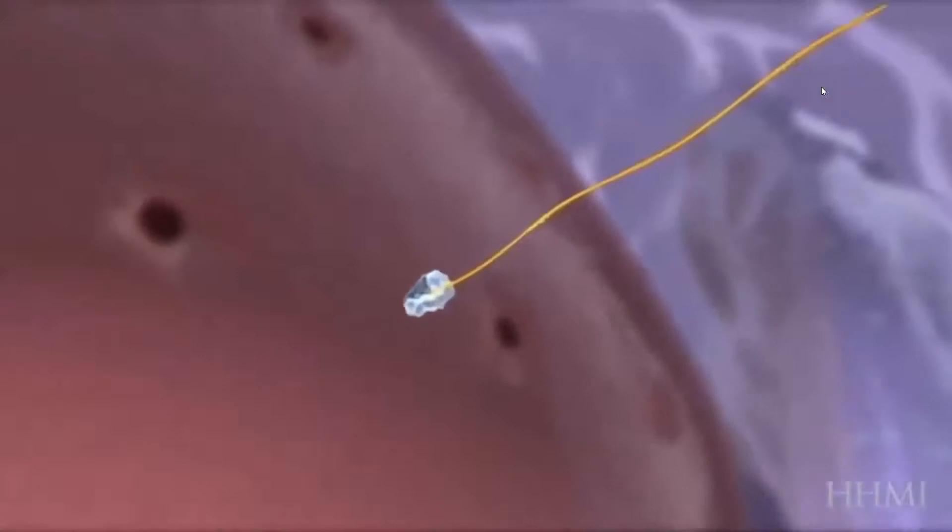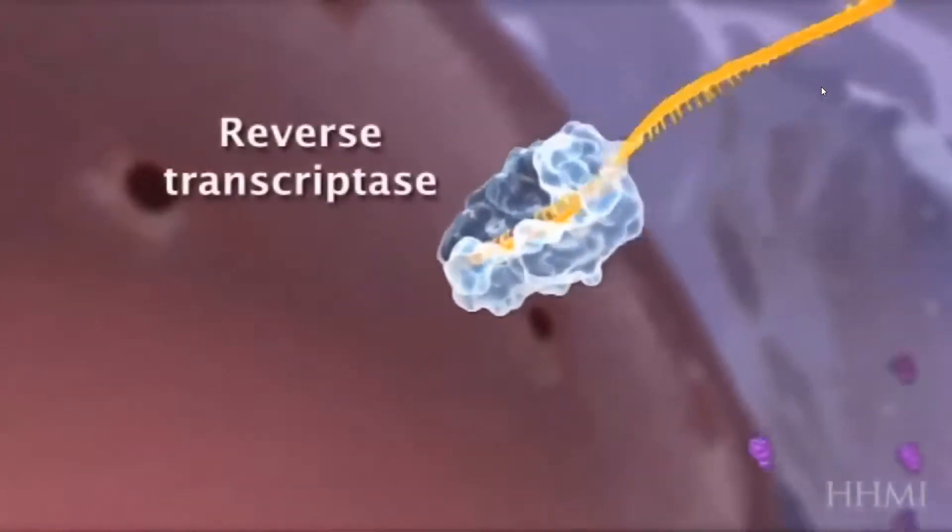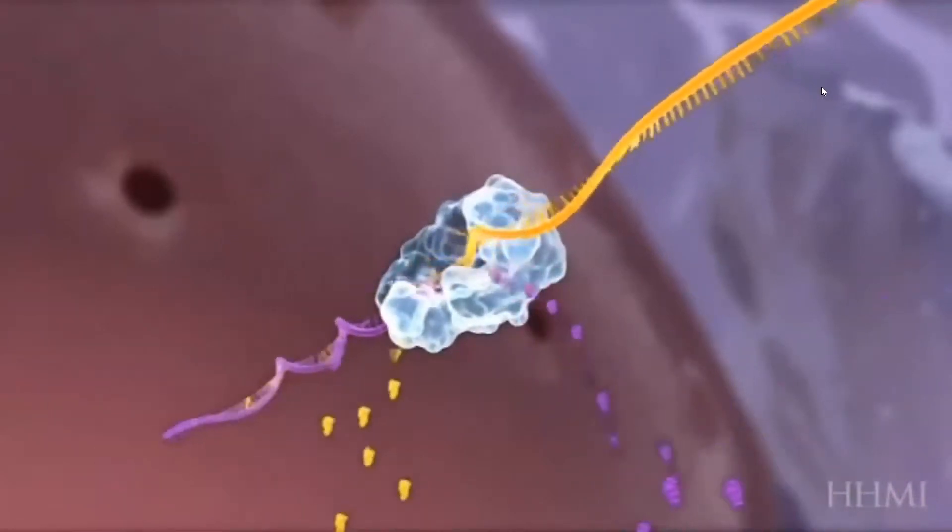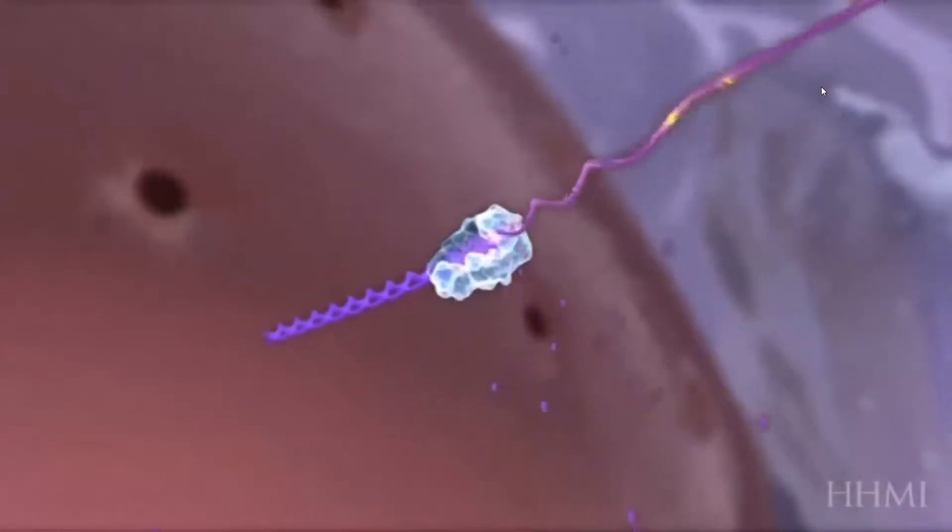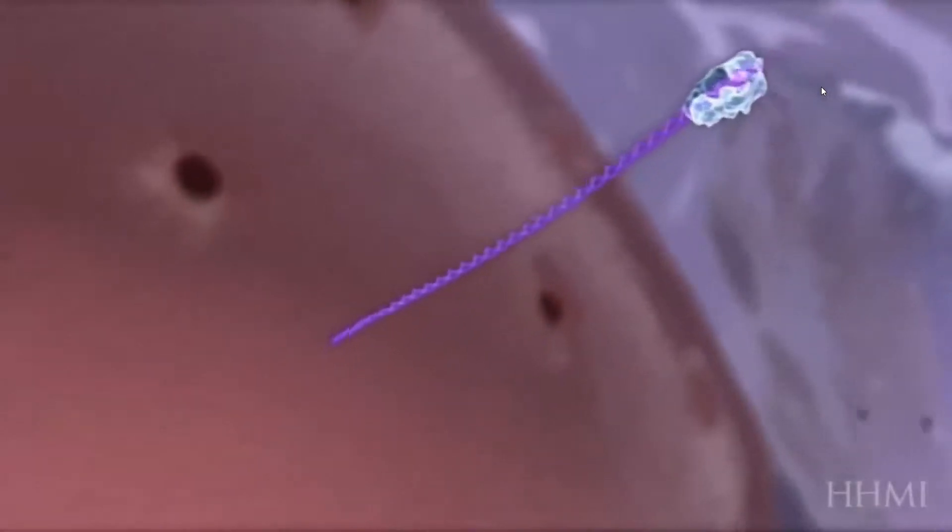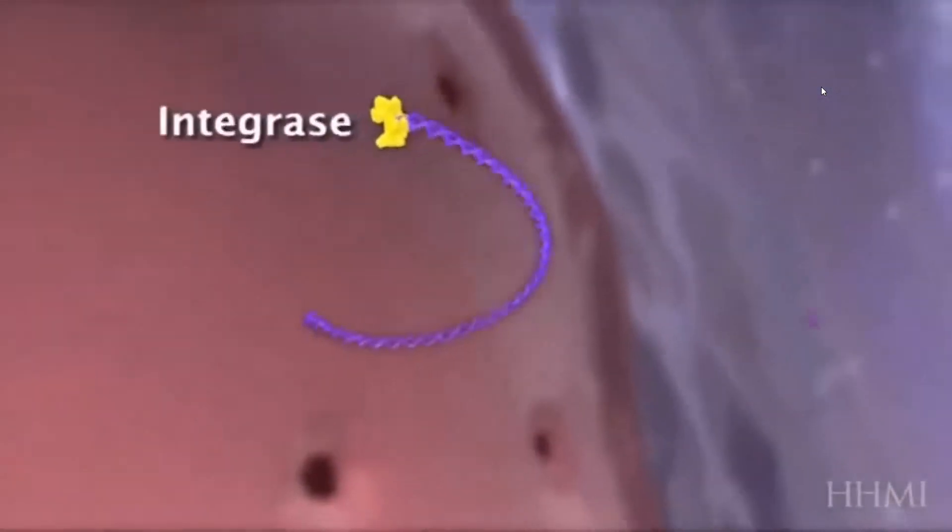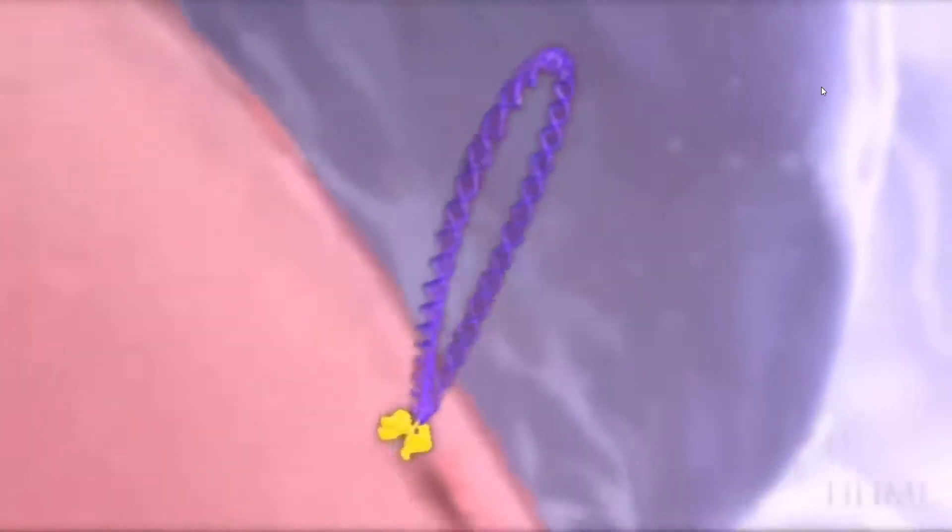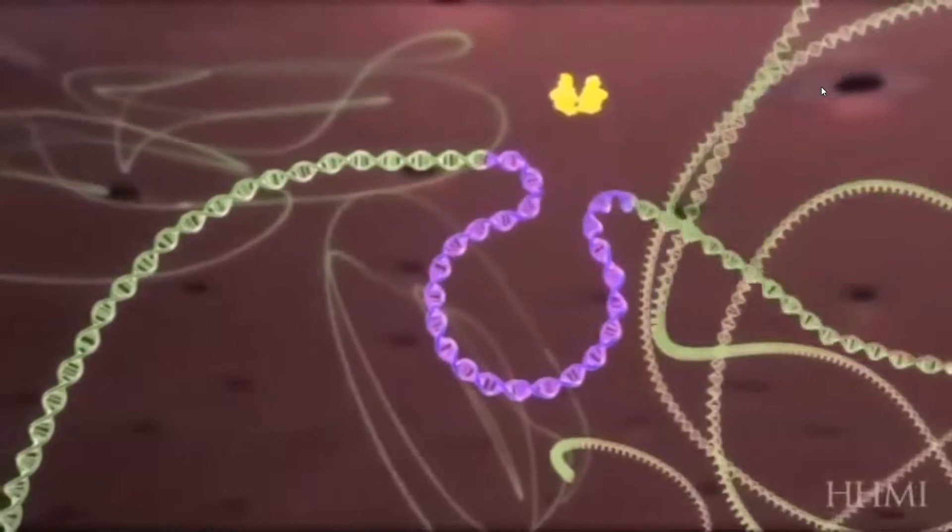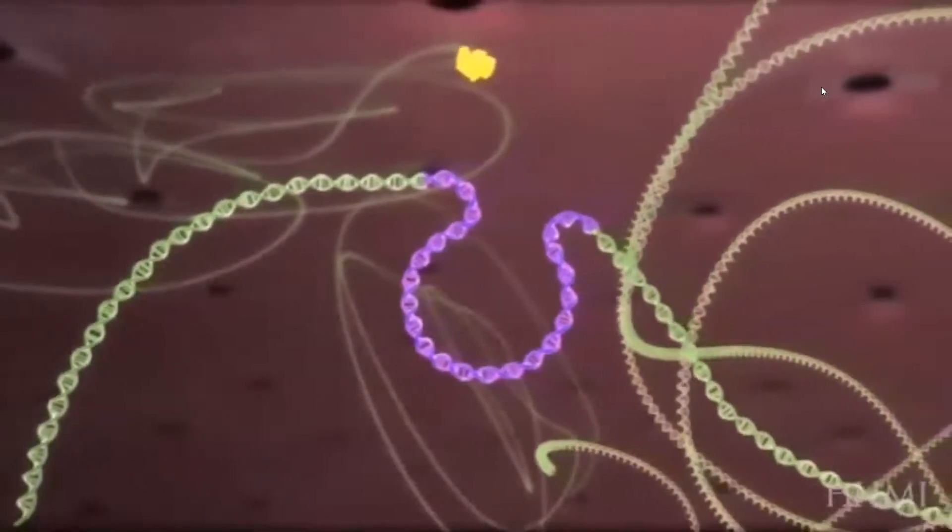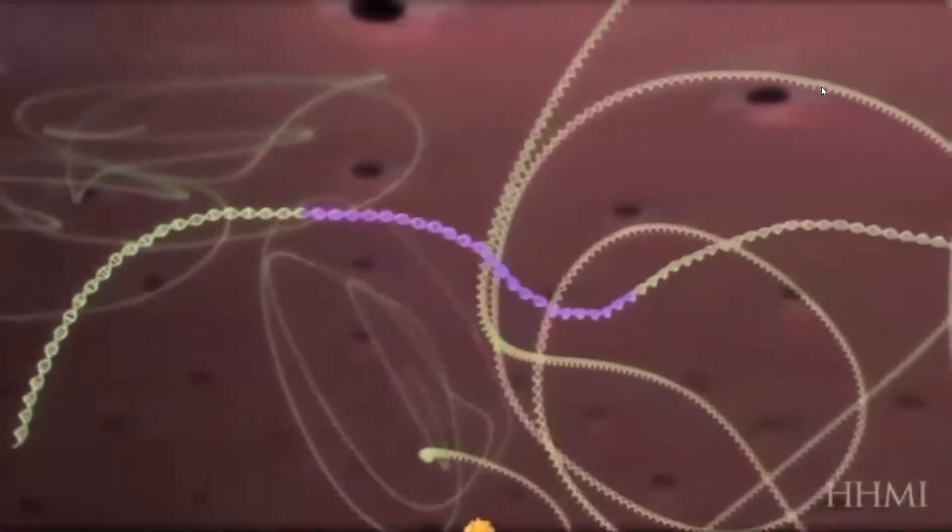Here we have reverse transcriptase, which takes the viral RNA and using host nucleotides, converts that viral RNA into a single strand of DNA. While it does that, it makes some random errors, which is characteristic of reverse transcriptase. It has very poor proofreading activity. That single-stranded DNA is again reverse transcribed into a double-stranded DNA. At that point, another enzyme called integrase that came in with the virus grabs hold of that double-stranded DNA and carries it through a nuclear pore into the nucleus. Within the nucleus, it finds the host chromosome, and the integrase enzyme makes a nick in the host DNA and allows HIV to insert itself into the host chromosome. That right there is what establishes lifelong infection.